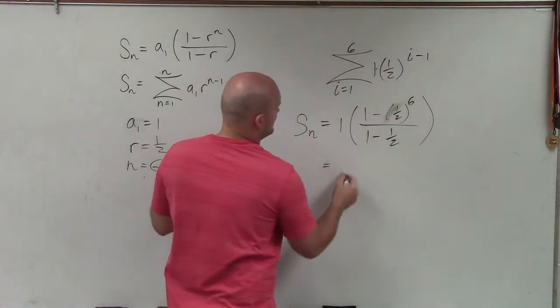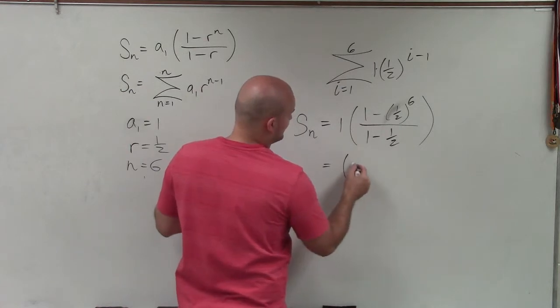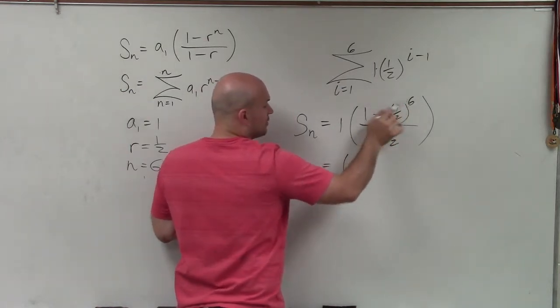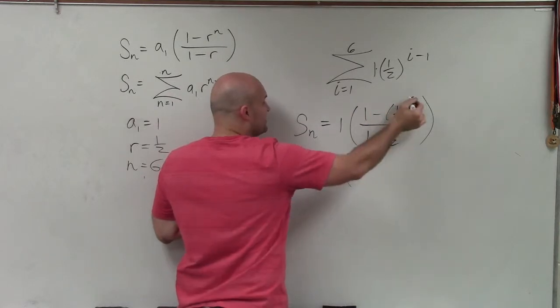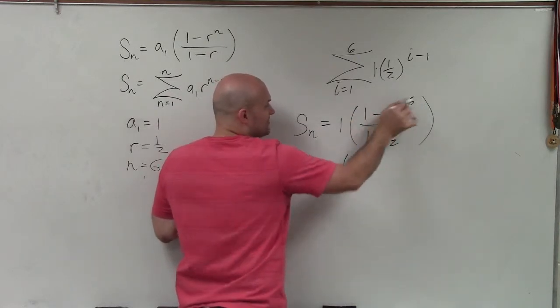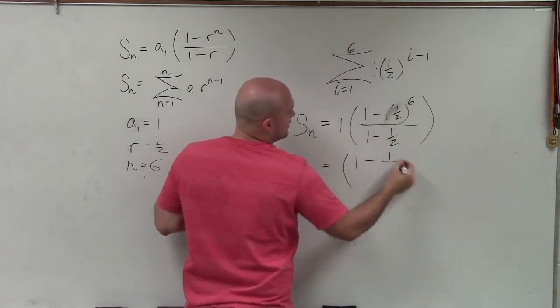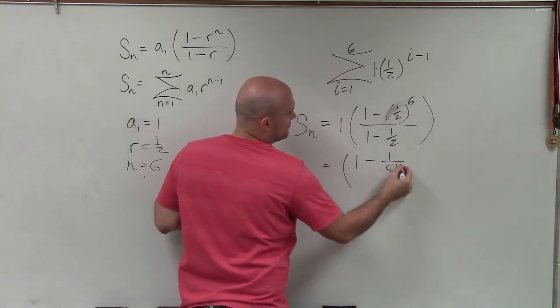All right, so let's go ahead and simplify here. So I have, we can pretty much forget about that 1 there. 1 minus 1 over 2, or sorry, 1 divided by 2, raised to the sixth power. And it's not negative, it's just that can be raised up there. That's going to be 1 to the sixth power is 1. 2 to the sixth power is going to be 64.